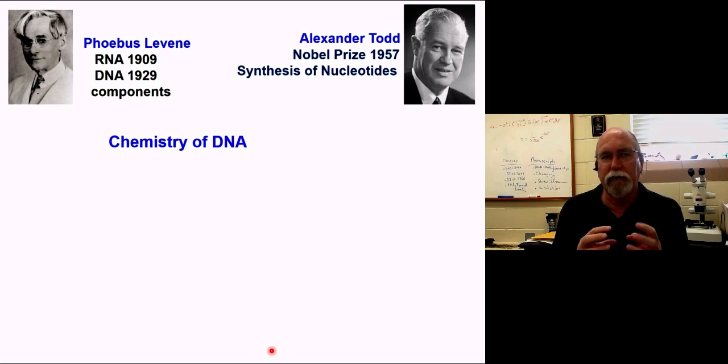Based on this information, Levine started to take RNA and pull it apart and understood some of the components. He actually came up with a model about what DNA looked like. He worked on RNA first, then came back to DNA and figured out the components of that nucleotide.